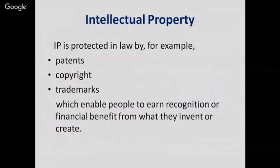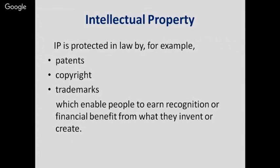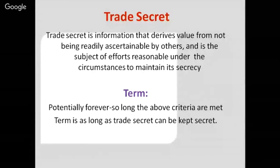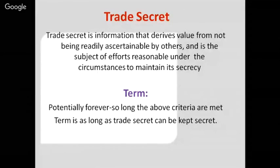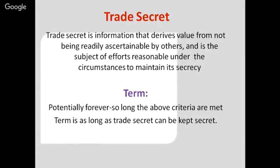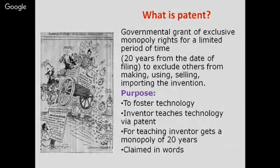Intellectual property is protected by law, for example in the form of patents, copyright, and trademarks, and it enables people to earn recognition or financial benefit from what they invent, innovate, or create. Trade secrets are information that derives value from not being readily accessible by others and are subject to reasonable efforts to maintain secrecy; the term can last forever so long as the criteria are met and the secret is kept.